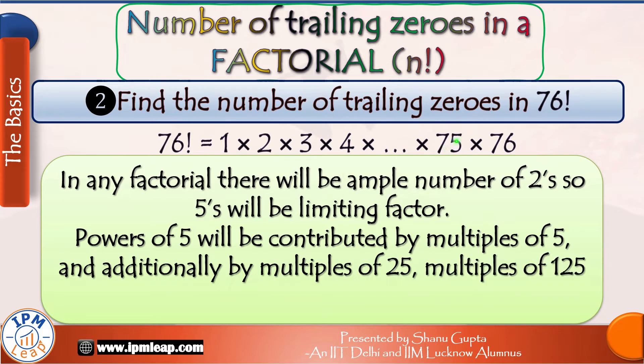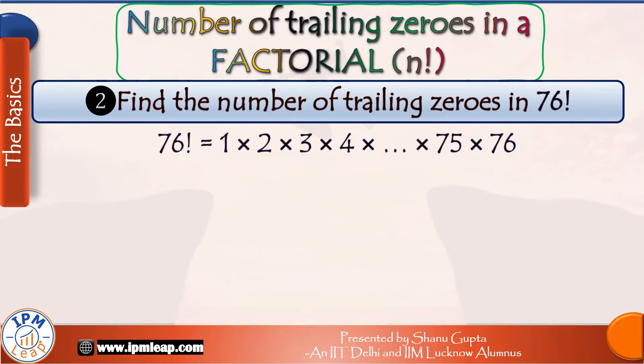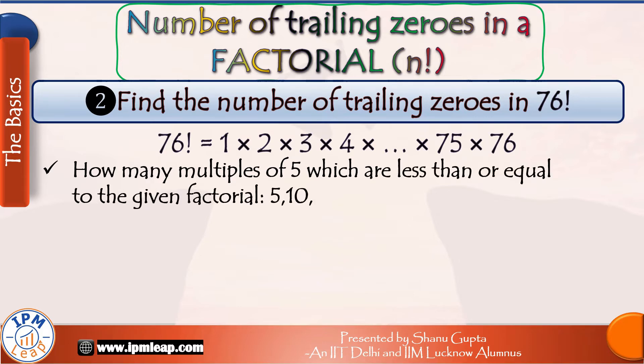So if we extract all 2s and all 5s from all these 76 numbers, it is easy to see that 2s are there in every even number. So there will be plenty of 2s. However, 5s come only from the multiples of 5: 5, 10, 15, 20 and so on. So the number of 5s will be our limiting factor. This is true for any factorial. Powers of 5 will be contributed by multiples of 5 and additionally by multiples of 25, multiples of 125 and so on. So to determine the total power of 5 contained in this number, count how many multiples of 5 which are less than or equal to the given factorial: 5, 10, 15, 20, up to 75. In other words, divide 76 by 5. The quotient is 15. So there are 15 multiples of 5, each of which will contribute at least a single 5 to this product.